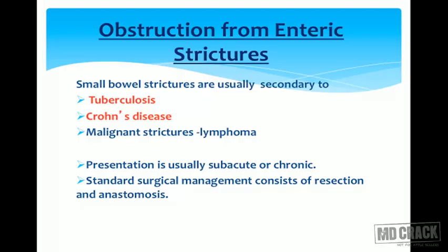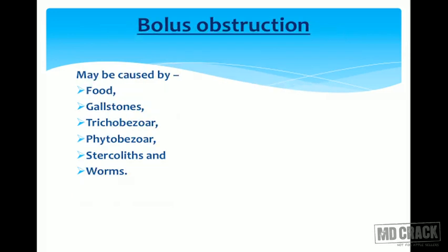Obstruction from enteric strictures: small bowel strictures are usually secondary to tuberculosis or Crohn's disease. Malignant stricture can be due to lymphoma. Presentation can be subacute or chronic. Standard surgical management remains resection and anastomosis.